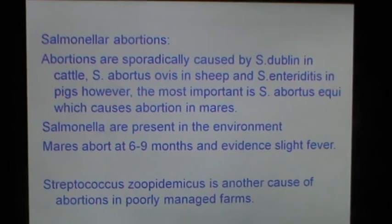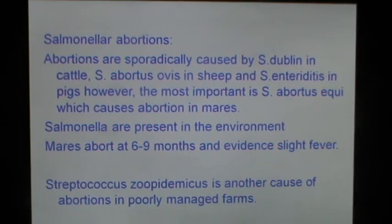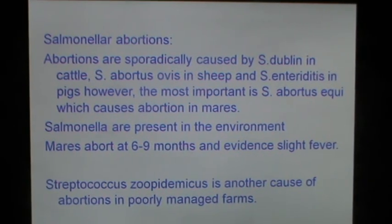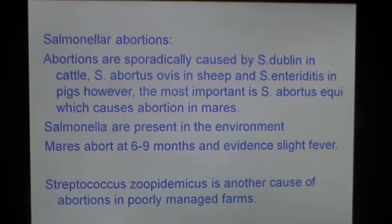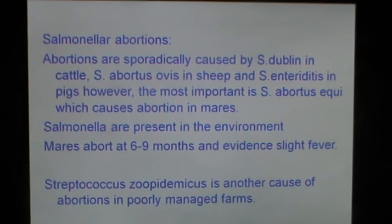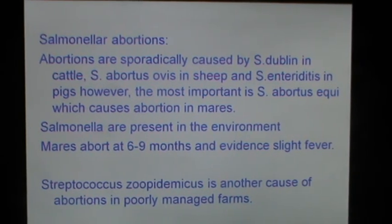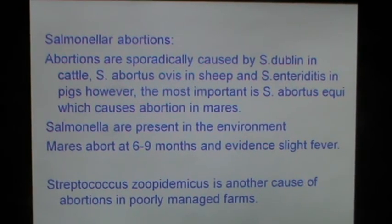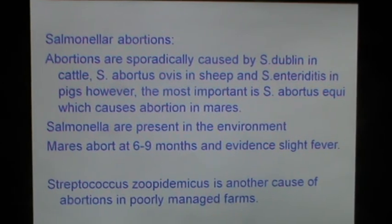Salmonella abortions are sporadically caused by Salmonella dublin in cattle, Salmonella abortus ovis in sheep and Salmonella enteritidis in pigs. The most important is Salmonella abortus equi, which causes abortion in mares. Salmonella are present in the environment and mares abort at 6 to 9 months and evidence slight fever. Streptococcal infection can also cause abortions in mares, occurring in poorly managed farms.